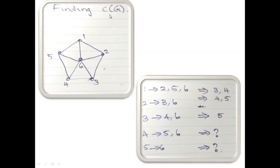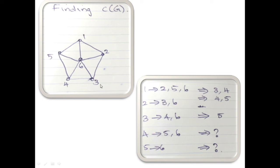Now you can see another example whose closure we will find. There are six vertices. Take vertex one, which is adjacent to two, five, and six. So the non-adjacent vertices are three and four. Now vertex two is adjacent to three and six — remember, you take only higher vertices since lower vertices are already handled. So the leaving non-adjacent terms are four and five. Vertex three is adjacent to four and six, so the leaving term is five. Vertex four is adjacent to five and six, so no other terms remain. Vertex five is adjacent to six, and there are no other higher-order vertices.